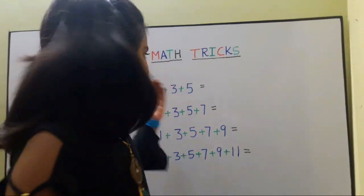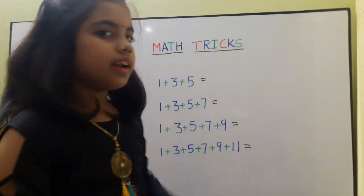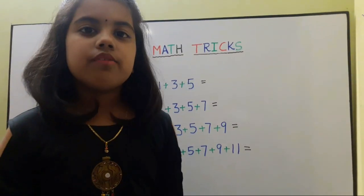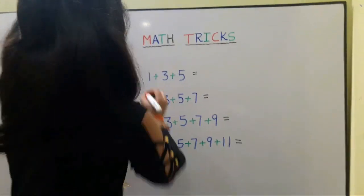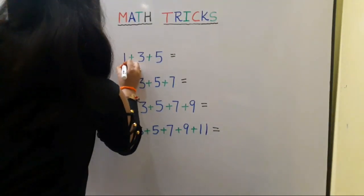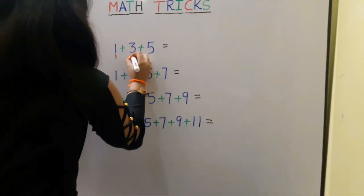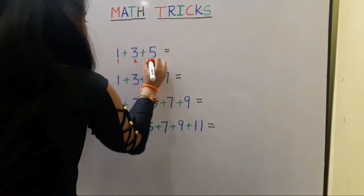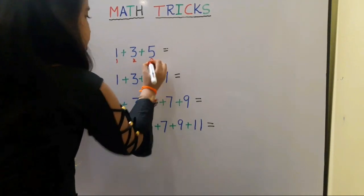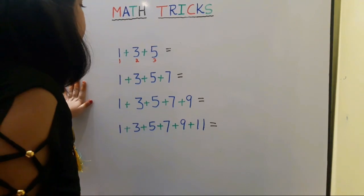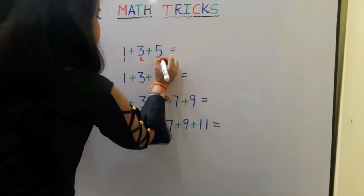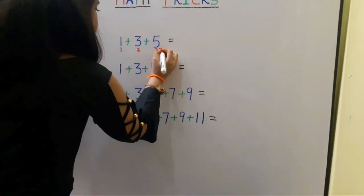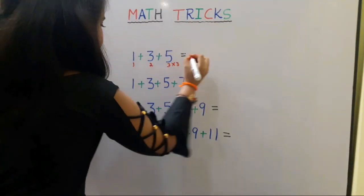We should find the sum of our numbers. First we should count the numbers: 1, 2, 3. We should multiply by the same number. 3 3's are 9.